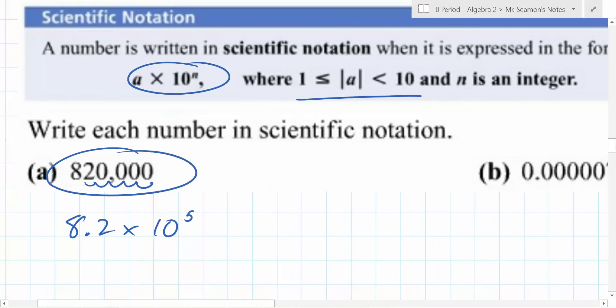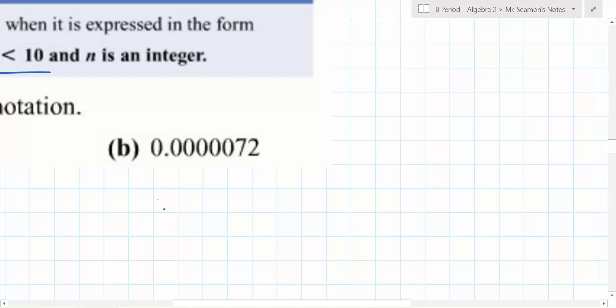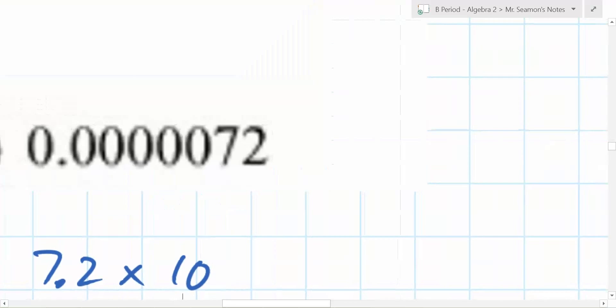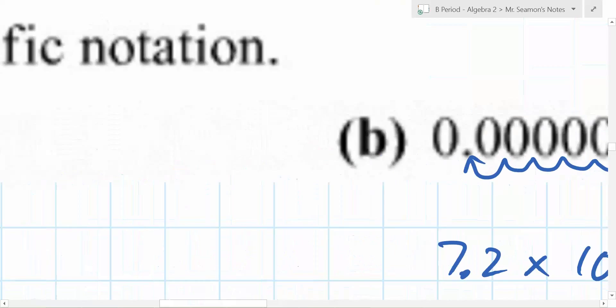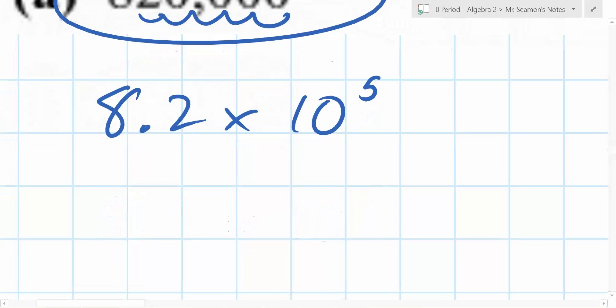So what about this one right here? Similar. Yeah, 10 to the 5th. Similar, right? It's going to be 7.2 times 10 to the what? 1, 2, 3, 4, 5, 6. Because that one's really, really tiny. You're taking 7.2 and you're making it smaller. In this case, you're taking 8.2 and making it bigger. Excellent.